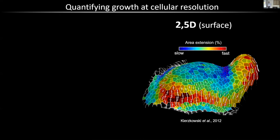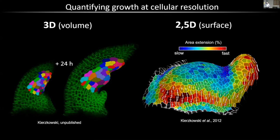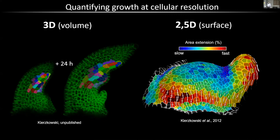We can also do this in full 3D. Here you see an early leaf of Cardamina with cell segmentation at the beginning and after 24 hours: mother cells and daughter cells. We can do this for the epidermal layer as well as deeper L2 layers. The data I will present today will be mainly on 2D surfaces. The main topic of my talk is looking at growth in leaves — what we can learn and how powerful this technology can be to understand leaf development.